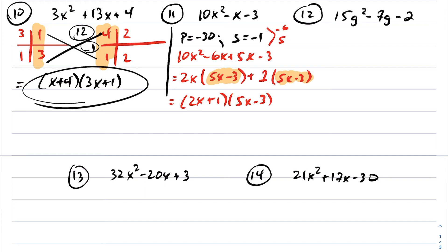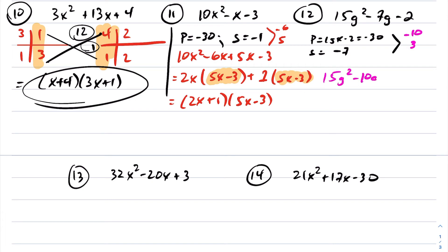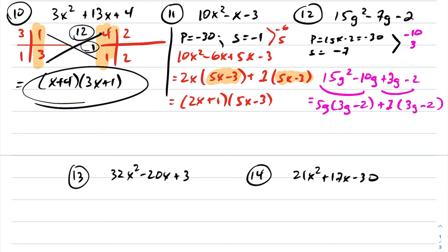Moving on — I'll use decomposition again. Product is 15 times negative 2 = negative 30, sum is negative 7. Two numbers that multiply to negative 30 and add to negative 7 are negative 10 and 3. Replace the middle term: negative 10g plus 3g minus 2. Factor by grouping — GCF 5g from the first two terms giving 3g minus 2, then factor out 1 from the last two. This factors into 5g plus 1 times 3g minus 2, fully factored.